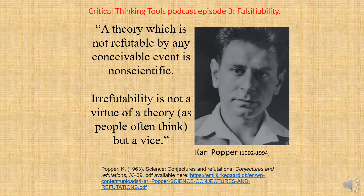Popper goes on to say that among the theories which interested him was Einstein's theory of relativity — by far the most important — and three others: Marx's theory of history, Freud's psychoanalysis, and Alfred Adler's so-called individual psychology. His small circle of students were thrilled by Eddington's eclipse observations, which in 1919 brought the first important confirmation of Einstein's theory of gravitation. This is what triggered Popper to start thinking about what was different between Einstein's theory and these other popular theories.